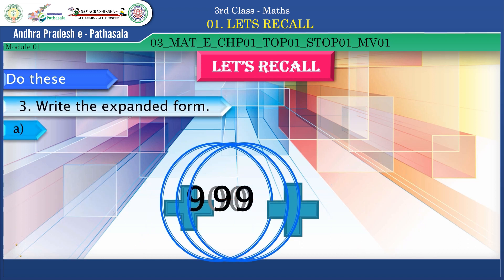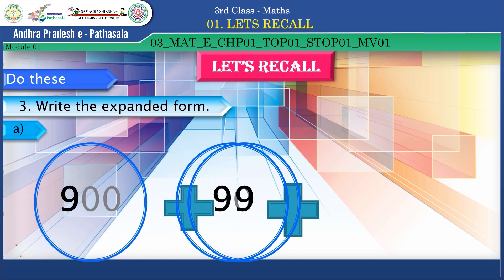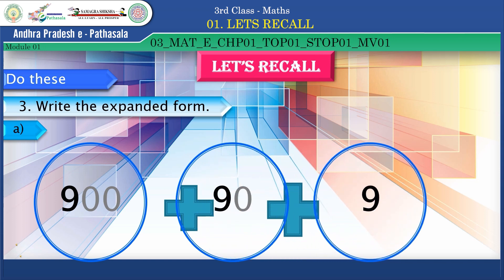Next one: nine hundred and ninety-nine. Here three circles are there. Nine hundred plus ninety plus nine — yes, super! Children, how is this activity? Oh, it's wonderful! Clap!